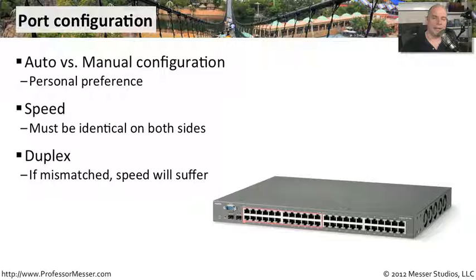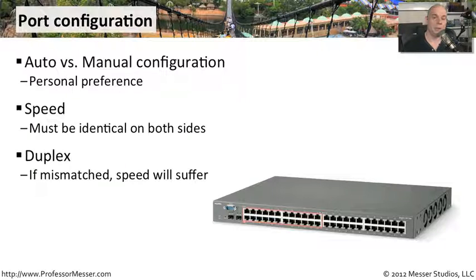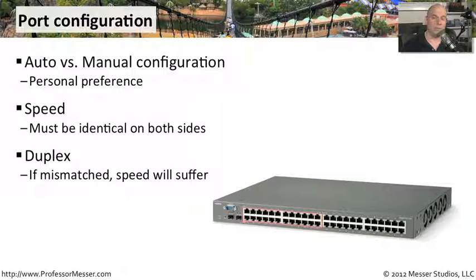Another setting is duplex. Unlike speed, you can set one side to half duplex and the other to full duplex and they will connect. However, there will be very poor throughput, because one side is expecting to handle communication one way and the other side is handling it in a completely different way. You'll end up with collisions and throughput problems. You want to make sure both sides are set to half duplex or both to full duplex, so traffic is sent as efficiently as possible.